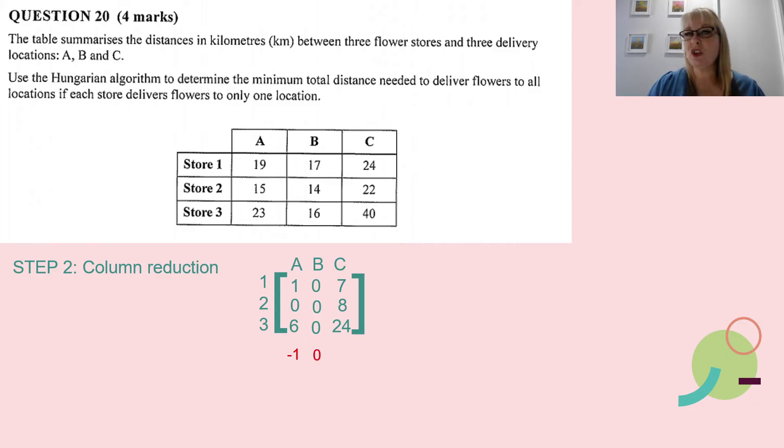Let's start by looking at each column. What's the smallest number in that first column A? Well, it's 1, so I'm going to subtract 1 from each of those values. I'm going to get a new matrix now of 1, 0, and 6 because I've taken one away from each. I don't need to do column reduction on column B; everything there is already 0. Let's move on to C. The smallest number in that column is 7, so I'm going to take 7 away from everything: 7 take away 7 makes 0, 1, and then 17 there.